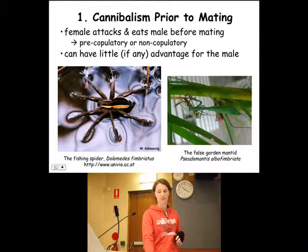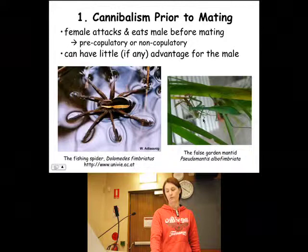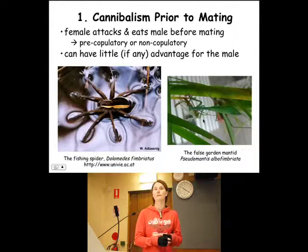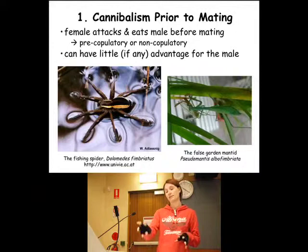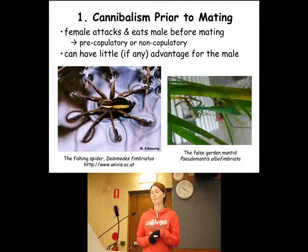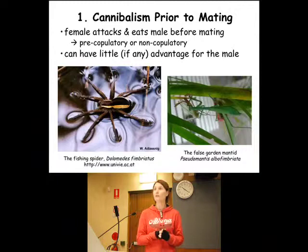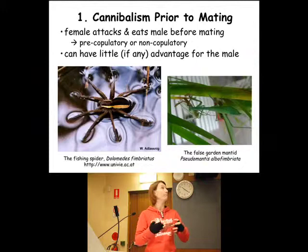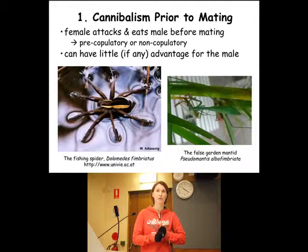In my mantids, this is an example of non-copulatory cannibalism. You can see this big female here — she's already polished off half of this male, but he's not mating. So she's just eaten him and for some reason he's been unable to begin copulation. In these mantids and in many other mantid species, both of these types of cannibalism occur. Sometimes the female will always attack before mating, and then it's really up to the male whether he can begin copulation. If he can't, it's non-copulatory; if he can, it's pre-copulatory cannibalism.